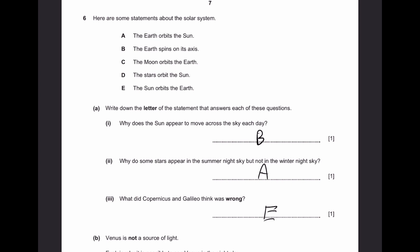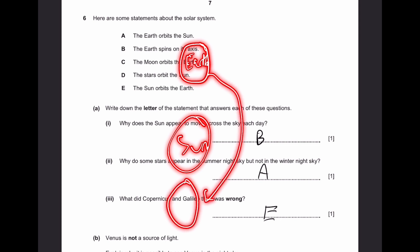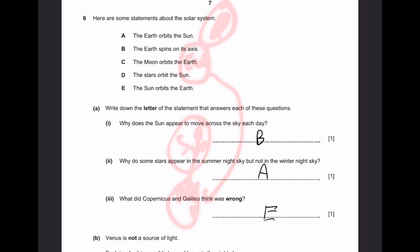Question 2. Why do some stars appear in the summer night sky but not in the winter night sky? The answer is A. Because the earth orbits the sun. Let's say the sun is here and in summer the earth is here. In winter, it'll go 180 degrees. The stars visible in summer might not be visible in winter because the sun blocks the star.